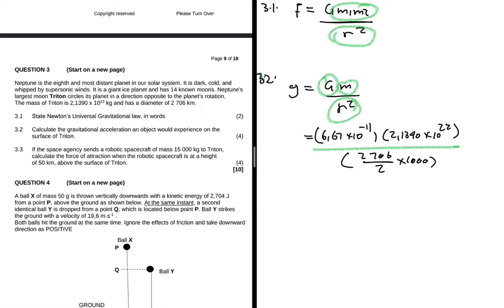So we're gonna multiply this by a thousand, that is because in one kilometer we have a thousand meters. We're gonna square that. Let me punch that in my calculator. So we have 6.67 to the minus 11 multiply by 2.139 to the 22 divided by 2706 divided by 2 multiplied by a thousand squared, and that is 0.7794.